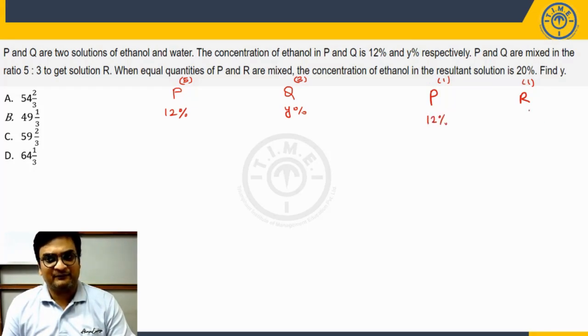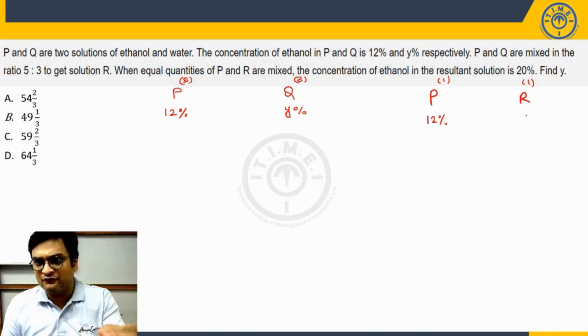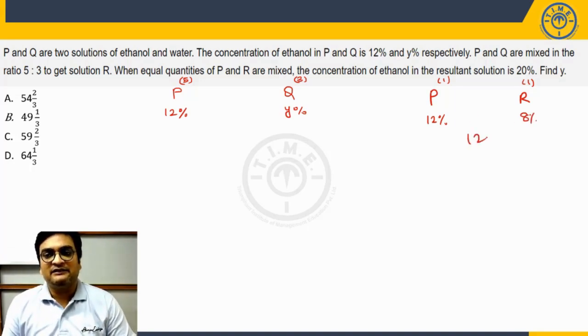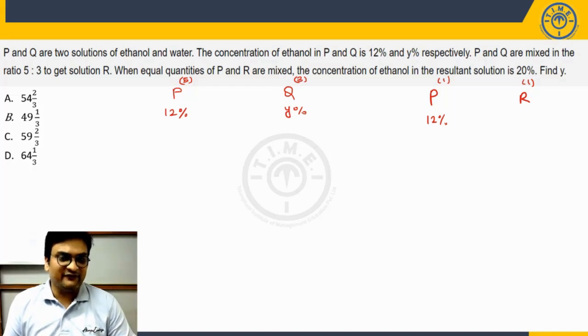we know P is 12%. We know R, we do not know the value of R. Let us assume for a time being, if it is 8%, then the resultant concentration will be simply average of these two, simple average of these two which will be 10%. But the point is right now we do not know what the value of concentration of R is, we will try to figure that out.